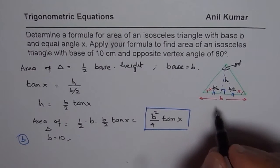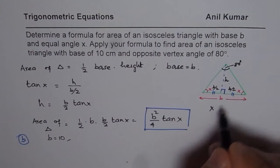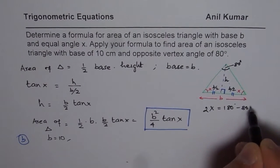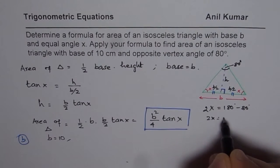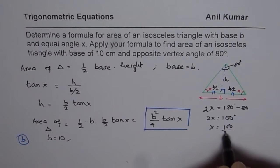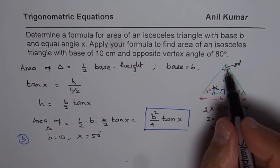In that case, let's work it out. So x plus x plus x which is 2x will be equal to 180 degrees minus 80 degrees. So 2x is equal to 100 degrees, x is equal to 100 over 2 which is 50 degrees. So x is equal to 50 degrees for us in this given triangle.